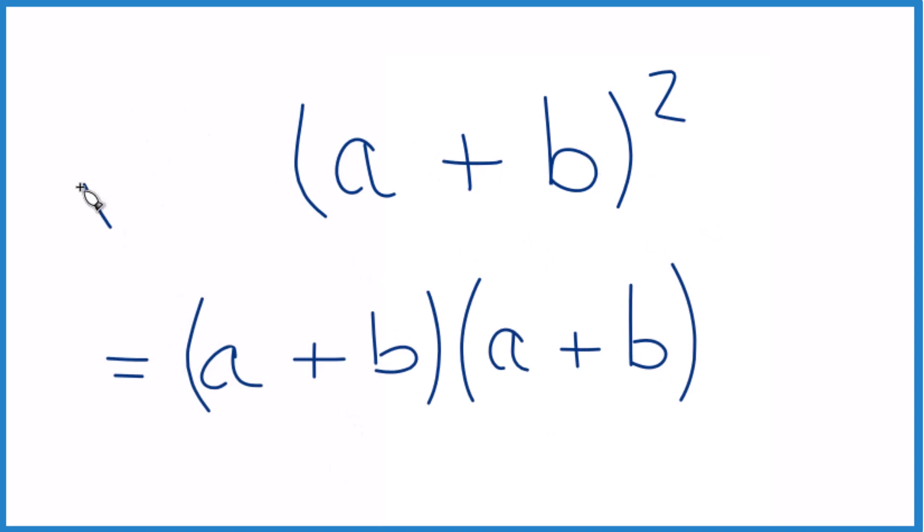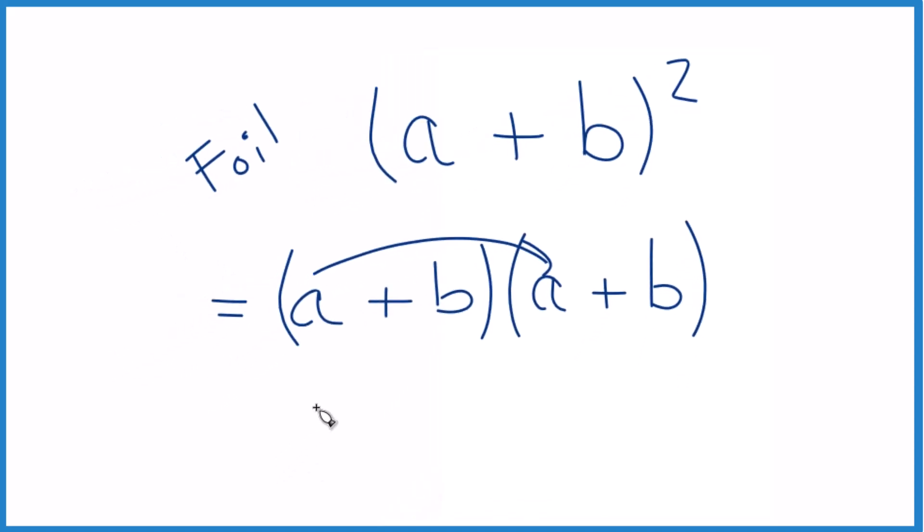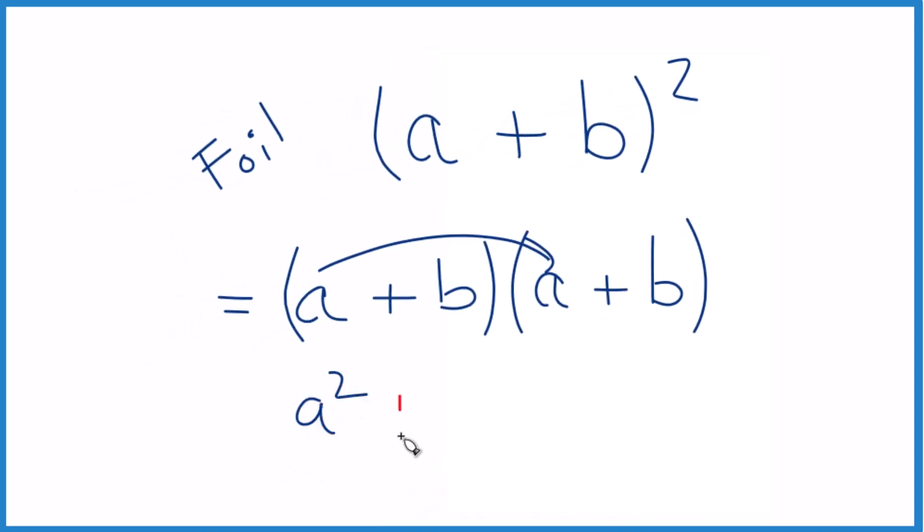Now we can use what's called the FOIL method here to expand and simplify a plus b squared. So we take the first term, that's the F, a times a, that gives us a squared plus the outside term.